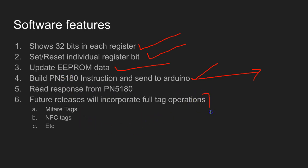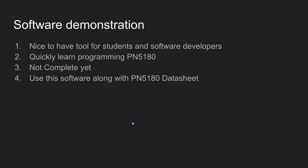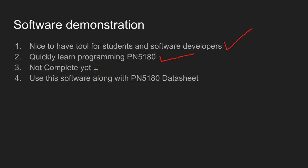This software is going to have many updates. Eventually it will be able to read and write to a full tag — like a MIFARE Classic, a MIFARE Ultralight, or NFC tags. Some of the advantages of this software: it's a nice-to-have tool for students and software developers. You don't have to spend months understanding these features. This is version 1.0, and the later versions will have full-fledged features.